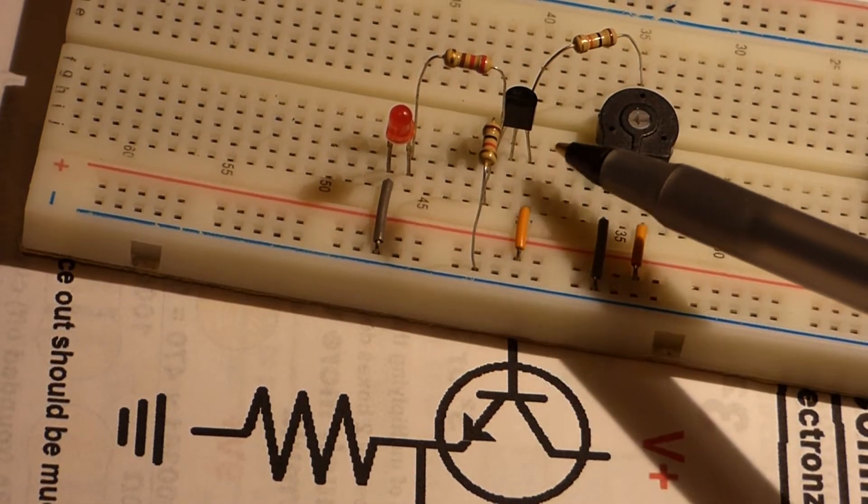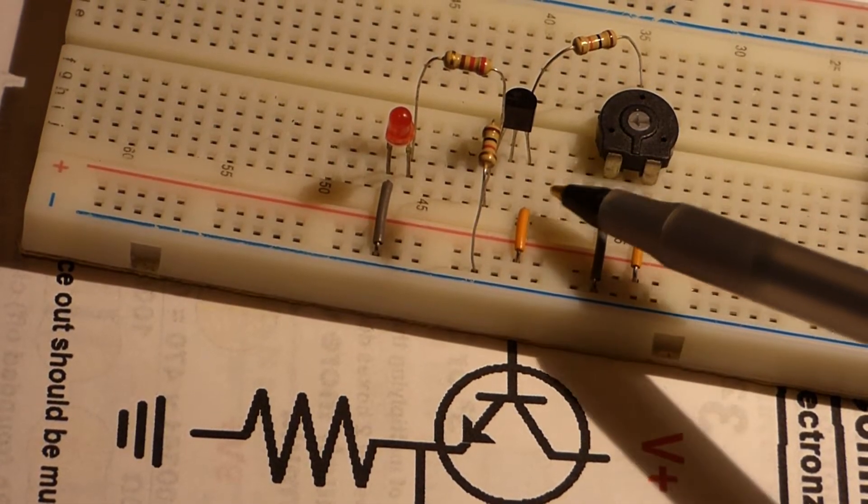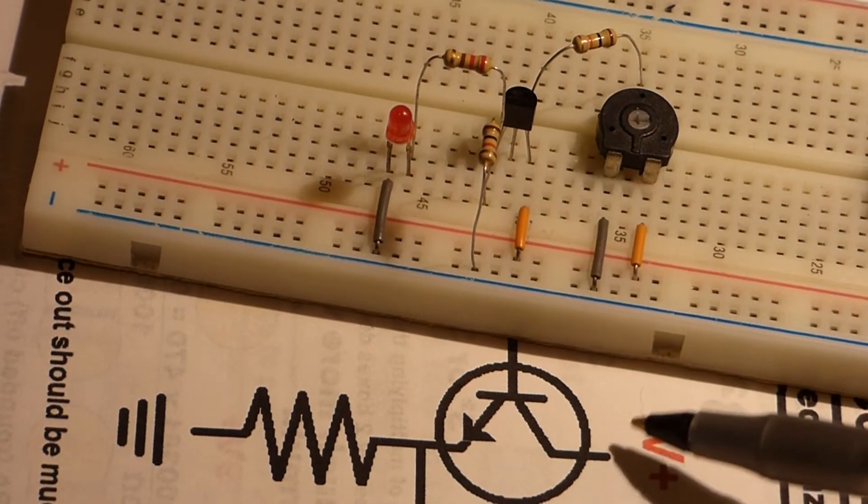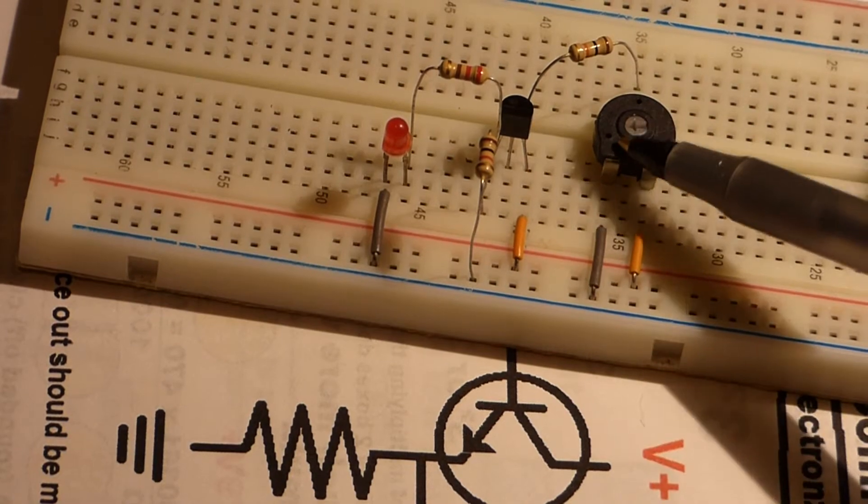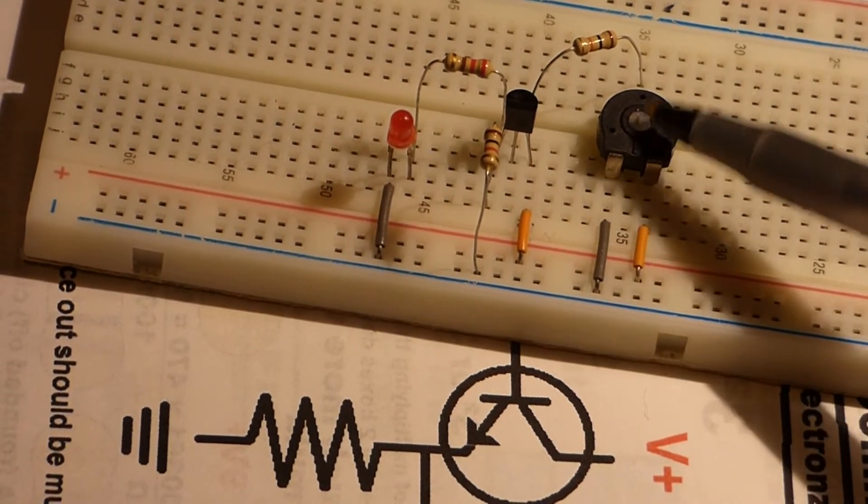Different texts will use one of those two terms. But here you can see we have the collector directly to the positive rail, the base, we have a control voltage.